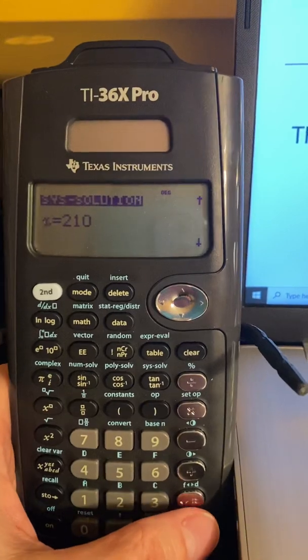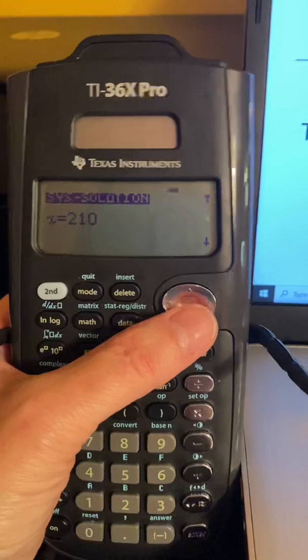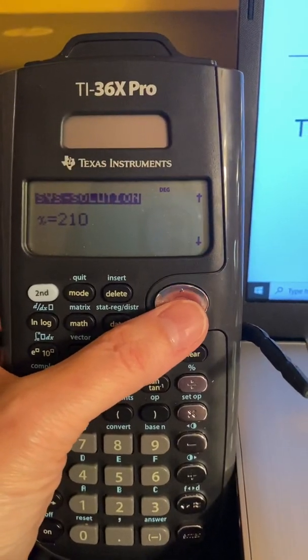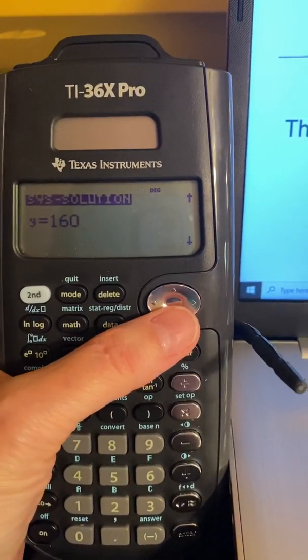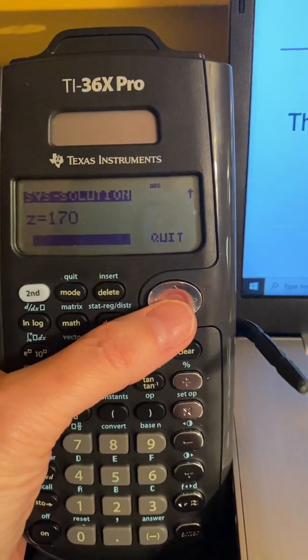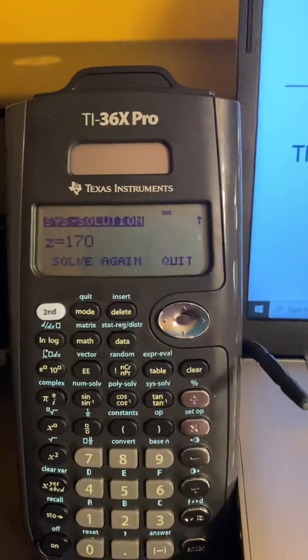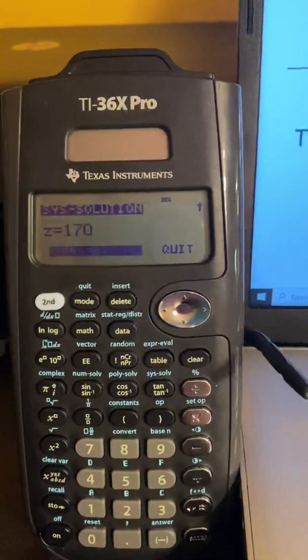And then it'll give you the values of your variables. So the first one, that's x, the x value is 210. Then we scroll down, and the y value is 160, and then the z value is 170. And that's how we use the TI-36X Pro to solve a 3x3 system of equations.